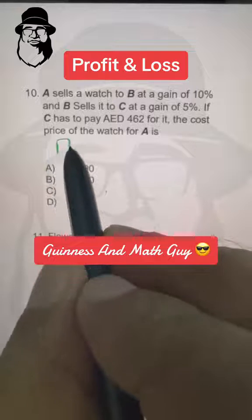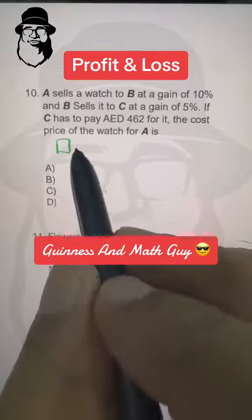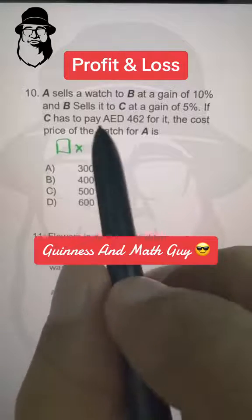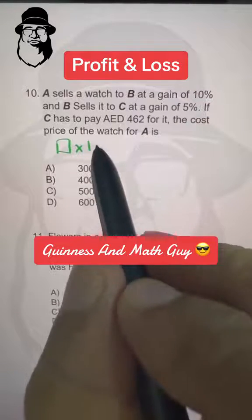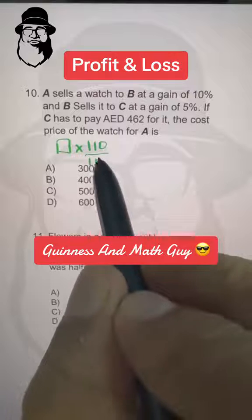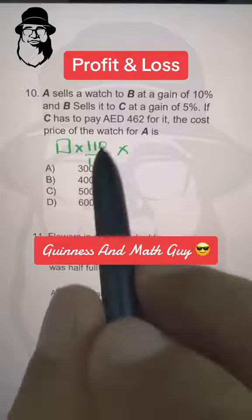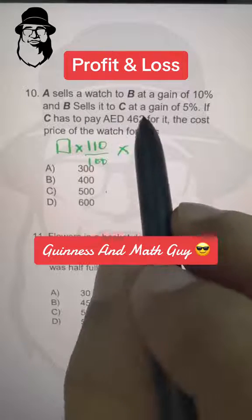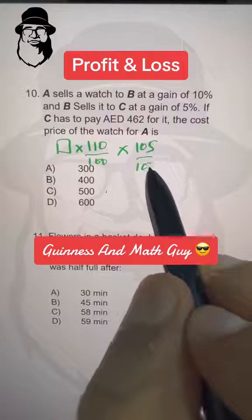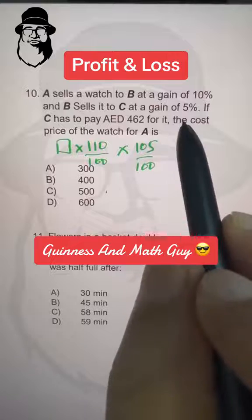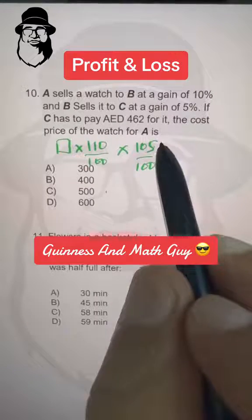Let's say the cost price of A is this box. A sells to B at a gain of 10%, so 110 over 100 times B sells to C at a gain of 5%, so 105 over 100 and cost price